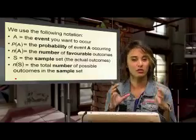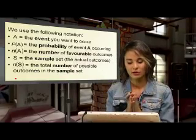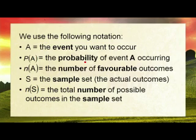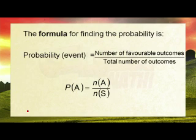We have a formula you can use. A is the event you want to occur. P(A) is the probability of that event occurring. N(A) is the number of favorable outcomes. S is the sample set. And N(S) is the total number of possible outcomes in the entire sample set. So the formula is: P(A) = number of favorable outcomes over the total number of outcomes in the sample set.